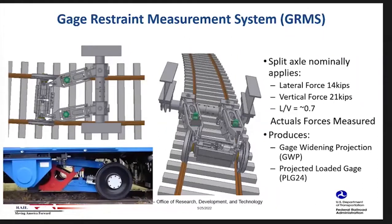The GRMS system includes two gauge beams — loaded and unloaded beams — and a fifth axle that allows us to apply a consistent nominal load, both vertical and lateral, under standard testing operations. We apply L/V of about 0.7 on track while testing. The system produces two indices: one is gauge widening projection, which is an indication of lateral track strength, and a projected global gauge, which is an estimation of what the gauge would be under extreme loading conditions.